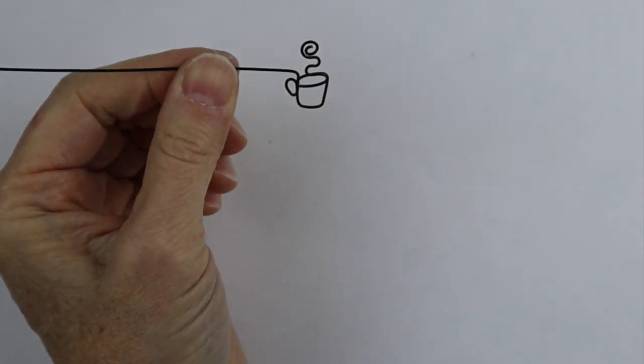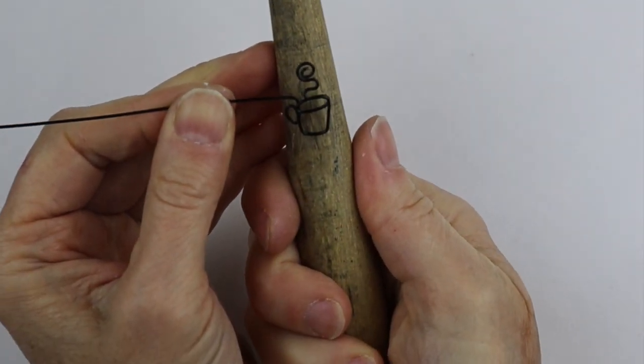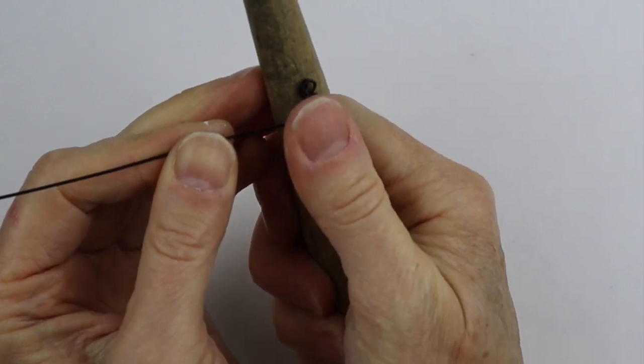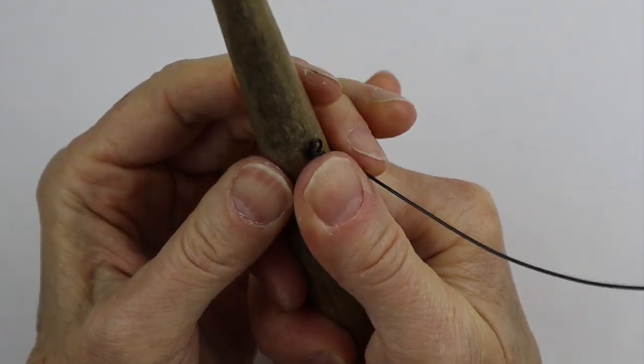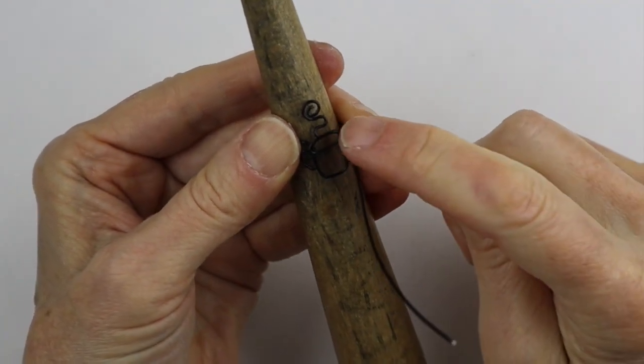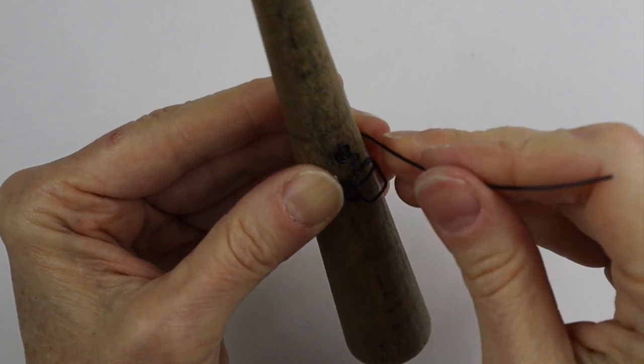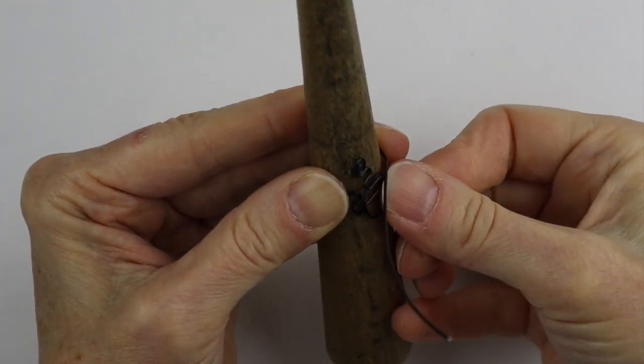And then now this part is going to go around your finger. So we're going to put it against the ring form, pull that around, and what we want to do is just finish it here at the top of the cup. Now what you're going to have to do is just try it on your finger to see about the size.